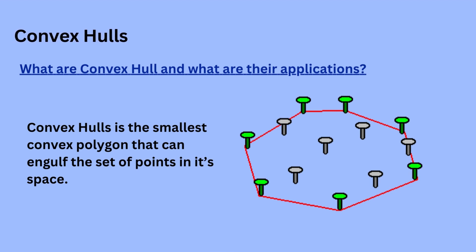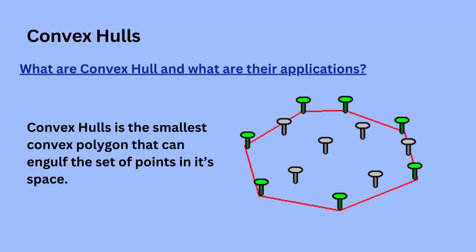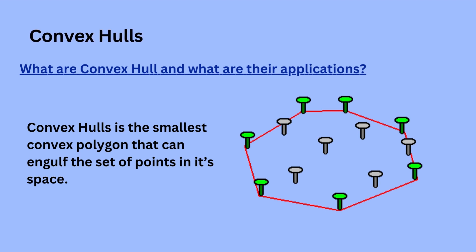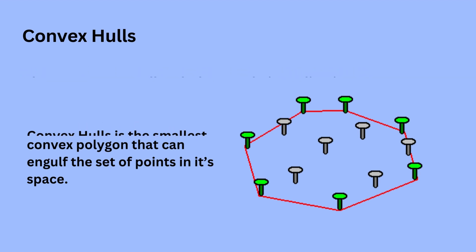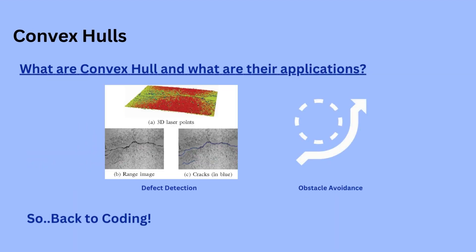So let's start with convex hulls. What are convex hulls and what are their applications? A convex hull is the smallest convex polygon that can engulf the set of points in its space. If we have a set of pins as displayed and we would like to snap a rubber band tight around them, the shape the rubber band makes is the convex hull. Convex hulls can be utilized to segment objects from the background in an image by identifying the outermost points of an object, constructing its convex hull, and separating it from its surrounding area.